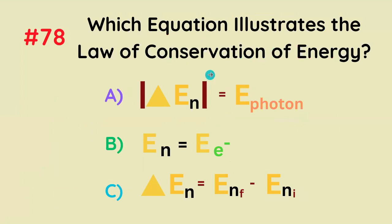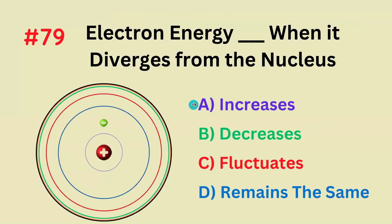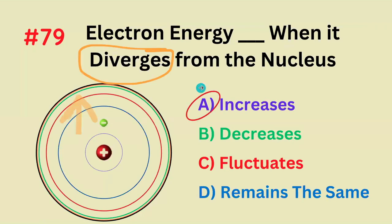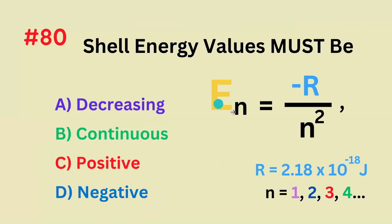Which of these equations illustrates the law of conservation of energy? The correct answer is that the absolute value of the change in energy of N equals the energy of the photon. Shell energy values must be what, using this equation? They must be negative, because if R is positive, negative of a positive is a negative, divided by a positive — so negative divided by positive is negative.